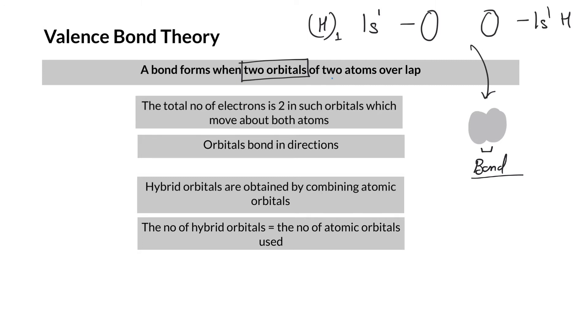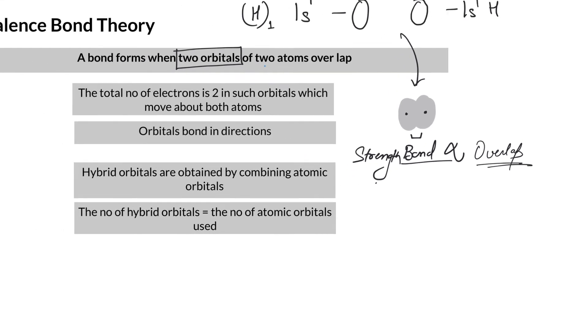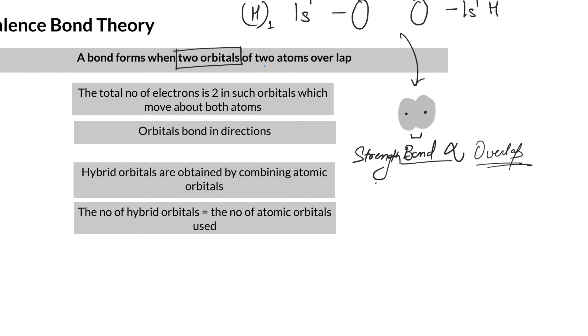One electron was here, one electron was here. Remember, an orbital is a region of space where you have a probability of finding the electron. Since these are overlapping, the total number of electrons in such orbitals has to be 2.